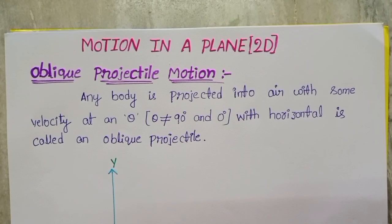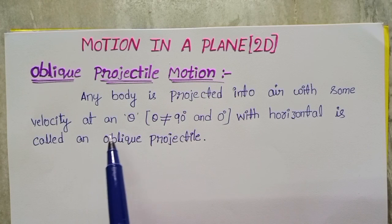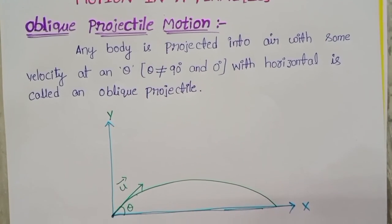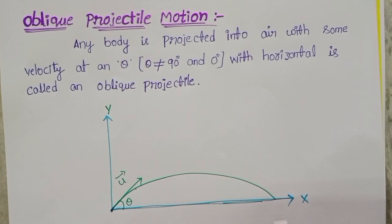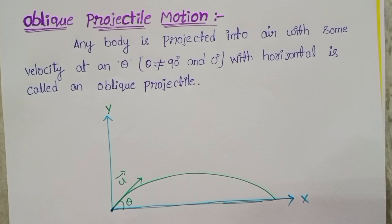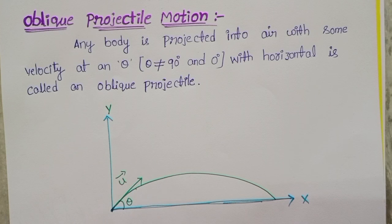Oblique projectile motion: any body projected into air with some velocity at an angle theta with the horizontal is called oblique projectile motion. It occurs from the ground. When theta equals 0 degrees, the object moves along the x direction; at 90 degrees, along the y direction — both are one-dimensional. But when projected at any other angle, this is two-dimensional motion and the path followed is a parabola.